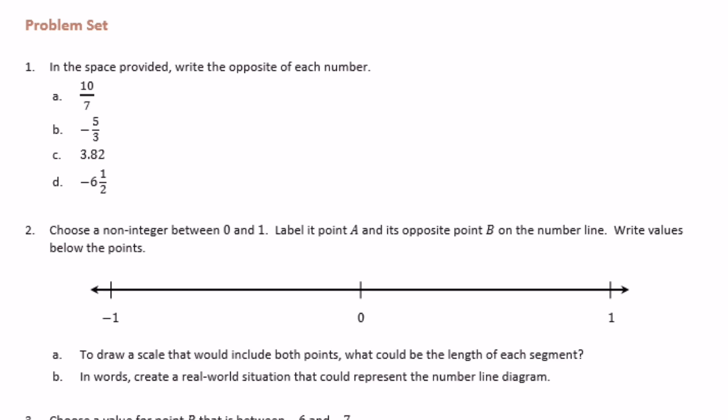In the space provided, write the opposite of each number. A: 10 sevenths — the opposite of 10 sevenths would be negative 10 sevenths. For negative 5 thirds, the opposite is 5 thirds.